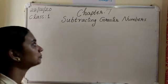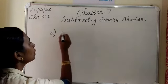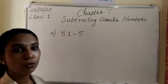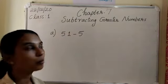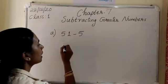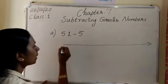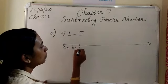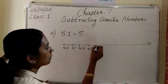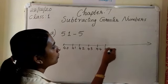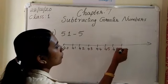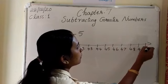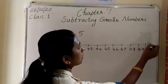Look at the question. The first one is 51 minus 5. For subtracting this on the number line I need a number line that has 51. So I am breaking the number line and starting from 40, 41, 42 — this is a part of a number line — 44, 45, 46, 47, 48, 49, 50, and also 51.